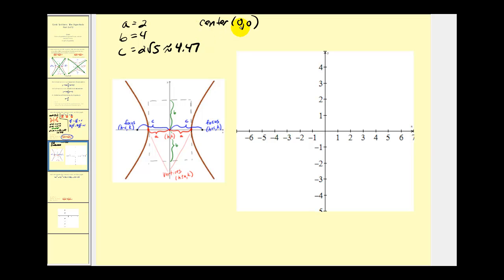Now we have the center and the values of a, b, and c, and we know we have a horizontal transverse axis. We'll start by plotting the center at (0, 0). Next, we add and subtract a from the x-coordinate of the center to determine the two vertices. Since a equals 2, the vertices are the points (2, 0) and (−2, 0).